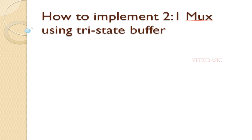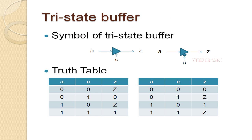Welcome to VHDL basics. Today we are going to implement a 2-to-1 MUX using a tri-state buffer. First of all, we need to know what a tri-state buffer is. This is the symbol of a tri-state buffer. A and C are the inputs and Z will be the output. There are two types of tri-state buffer with respect to the control — whether it is enabled with high or enabled with low.